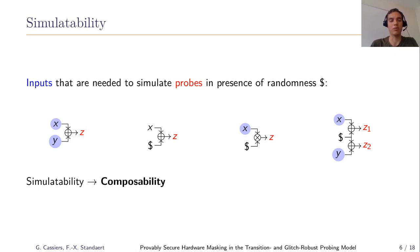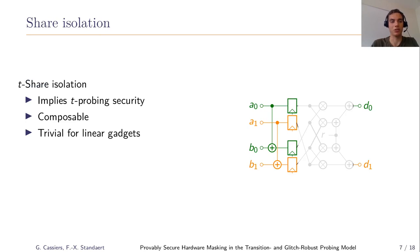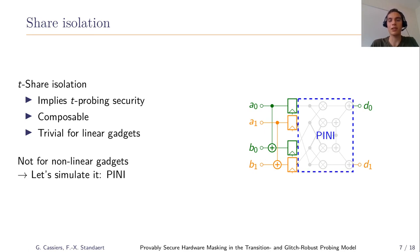The intuition for our proofs is shared isolation. When a circuit has share isolation, it is split into one part per share and those parts do not communicate. With two shares — one green and one orange — security against one probe holds: probing the green part reveals nothing about the orange part, hence nothing about A or B. This extends to higher order as long as shares exceed probes. Share isolation is composable and trivially instantiated for linear gadgets. However, for nonlinear gadgets like the AND gate, there are interconnections between the orange and green parts.